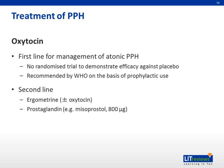Now we go on to the treatment of PPH. The first line of treatment and management of atonic PPH is oxytocin. However, there is no randomized trial at the moment to demonstrate the efficacy of oxytocin against placebo. It is recommended by WHO on the basis of prophylactic use. Second line management is ergometrine and/or oxytocin. The second type of medication that can be used is any prostaglandin — in this paper, misoprostol is cited, though other forms such as carboprost can also be used.